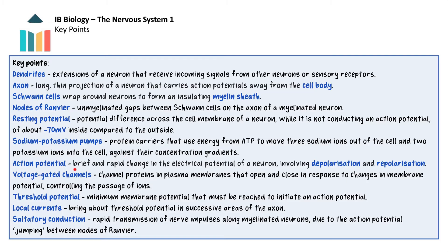An action potential is a brief and rapid change in the electrical potential of a neuron involving depolarisation and repolarisation. Voltage-gated channels are channel proteins in plasma membranes that open and close in response to changes in membrane potential, controlling the passage of ions. The threshold potential is the minimum membrane potential that must be reached to initiate an action potential. Local currents bring about the threshold potential in successive areas of the axon. Saltatory conduction is the rapid transmission of nerve impulses along myelinated neurons due to the action potential jumping between nodes of Ranvier.